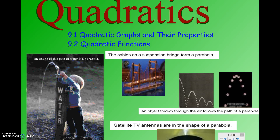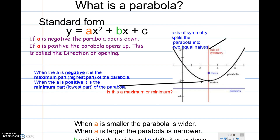This is sections 9.1 and 9.2, and we're going to talk about graphing quadratics. Basically, the graph of a quadratic looks like a parabola. You can see different examples of parabolas: a path of water, a suspension bridge, and an object being thrown. There are different things you'll see in the real world that look like parabolas and follow that same path.